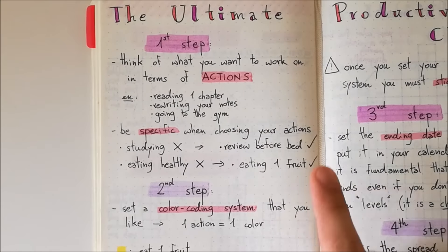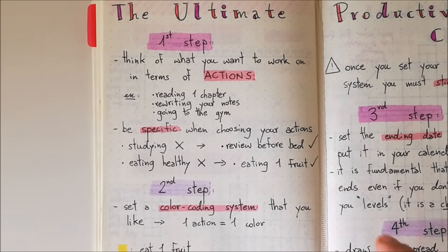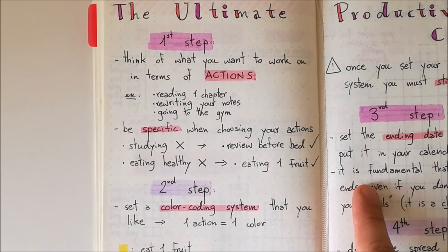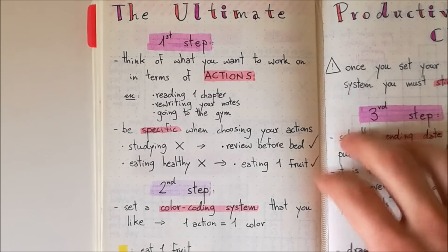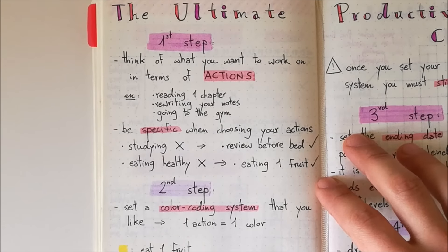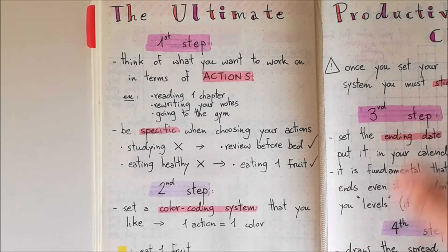But when choosing your actions, you can first think about your year goals, for example, and then according to each goal, choose two or three actions or maybe one action. So you better have like four or five very specific good actions instead of having like 20 blurry actions.